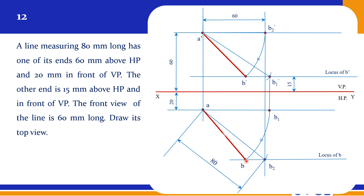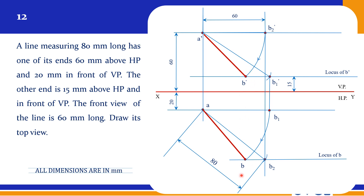This is our final B and should be drawn with a thick line — this is the final top view. You can cross check by drawing a thin line here — it is lying on the same thin projector. So our problem is 100% correct.